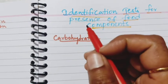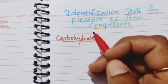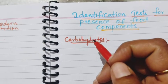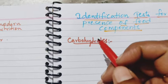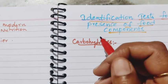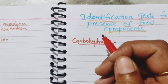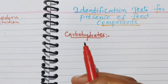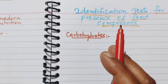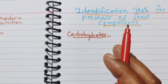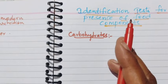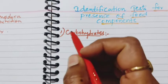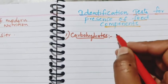Hello students. In the earlier class we have studied about different food components present in the food. The food should contain different food components to make it a balanced diet. There are simple tests wherein we can test whether the given food item contains different food components or not. Here are some identification tests, or confirmation tests, for food components. Firstly, we are going to see the test for carbohydrates or simply starch.